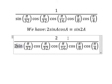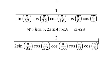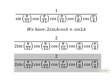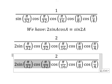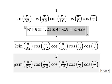So for this one, 2 sine π/32 cosine π/32, and similar for the others. We need to transform this into sine π/16, because 2 times π/32 gives us π/16.